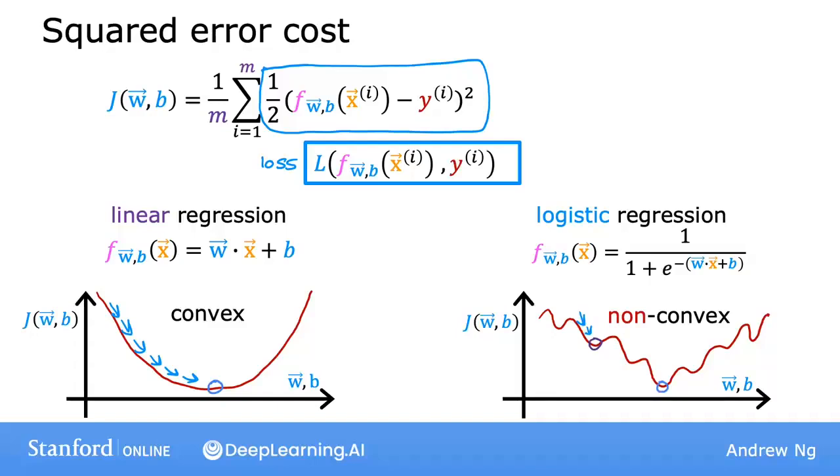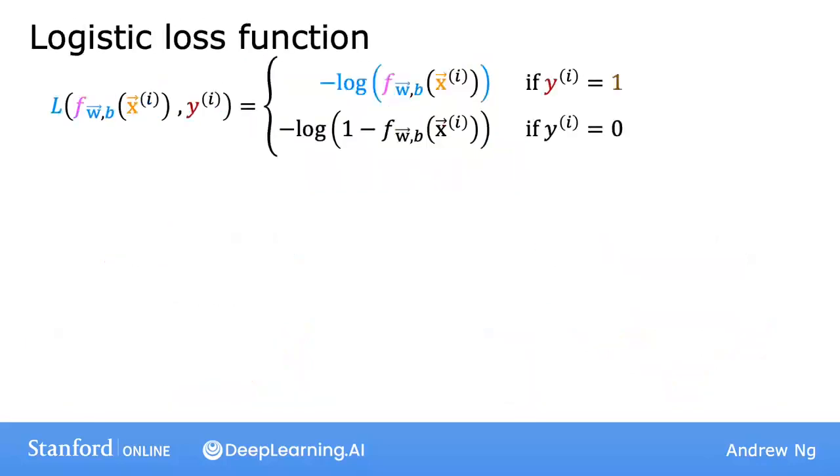We'll see shortly that by choosing a different form for this loss function, we'll be able to keep the overall cost function, which is one over m times the sum of these loss functions, to be a convex function. Now, the loss function inputs f of x and the true label y, and tells us how well we're doing on that example.